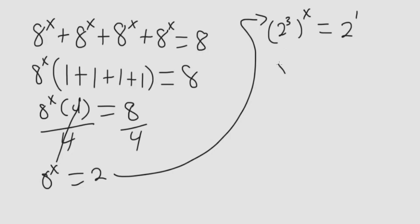For here we can use this rule: x to the m times n is equal to x to the m n.